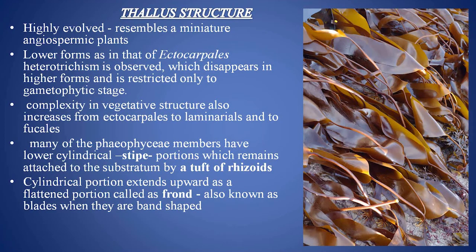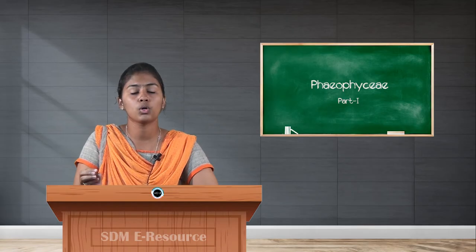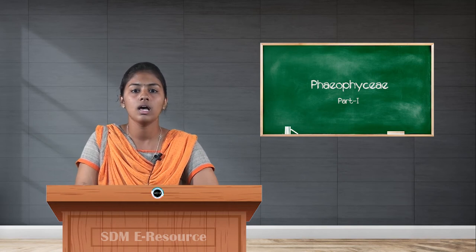This stipe of the thallus is attached to the substratum by a tuft of root-like or holdfast-like structures called rhizoids, which are mainly parenchymatous in nature.